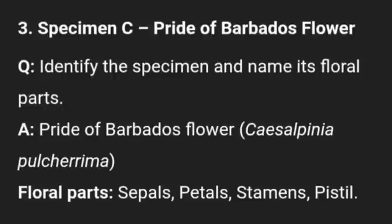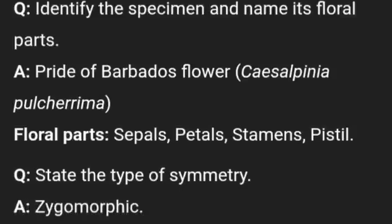Specimen C is Pride of Barbados flower. You have to identify the specimen and name its floral parts. This is one you need to know how to draw — label the sepal, the petals, the stamen, and the pistil. Very important: learn how to draw it. Then state the type of symmetry — it has zygomorphic symmetry.